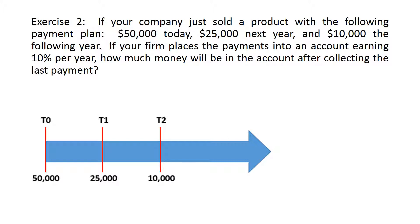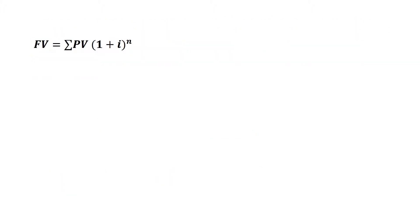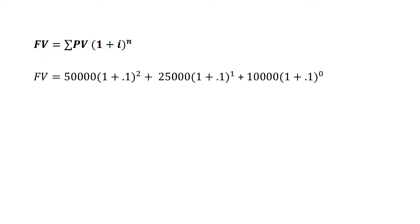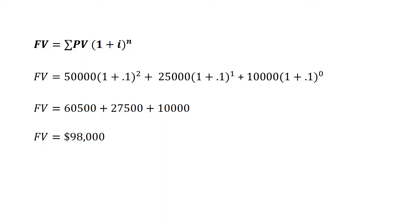At t2 is the 10,000 — the amount we are investing the year after. The 50,000 will remain in the account for two periods of time earning 10%. The 25,000 will remain for one year earning 10%. However, the 10,000 is the last payment — we will be withdrawing the whole amount so we will not be earning anything on it. Using the future value equation: 50,000 is raised to the power of two, 25,000 to one, and 10,000 to zero.